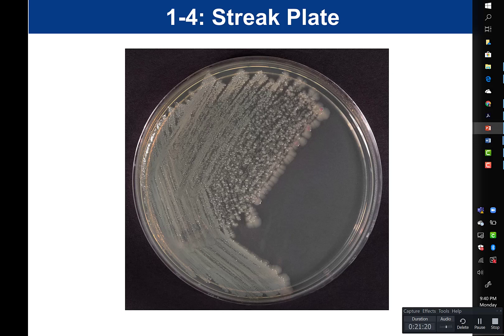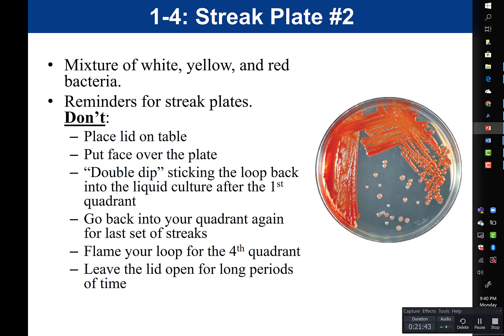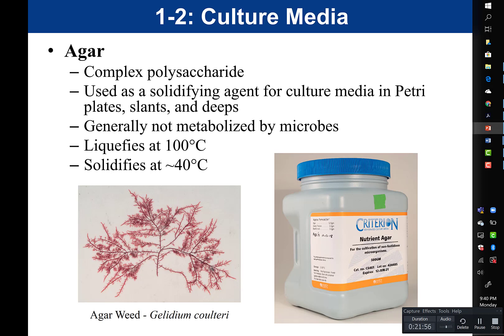A bad streak plate is one where you do not see isolated colonies — just a big mass of bacteria. One reason could be that the person dipped into the broth more than once. This slide reviews what not to do when performing a streak plate.